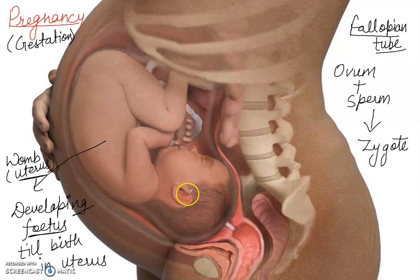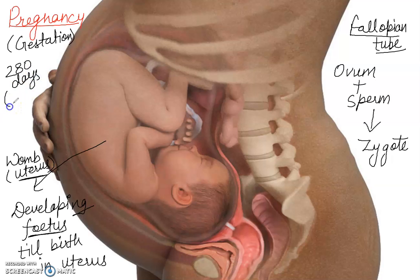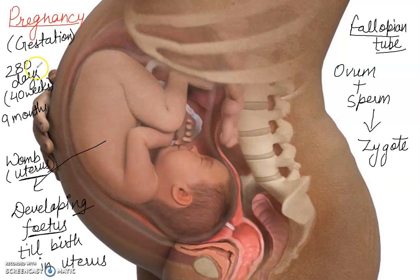Pregnancy continues till the birth of the baby. The duration of pregnancy in human beings is about 280 days, or you can say 40 weeks — approximately nine months. It is calculated from the first day of the last menstrual cycle. During pregnancy in the female reproductive system there will be a temporary stoppage of the menstrual cycle.